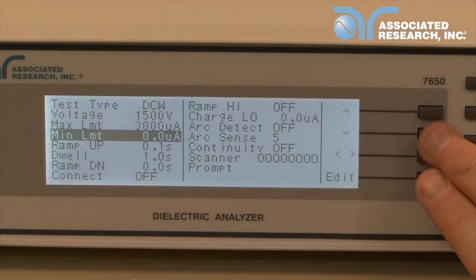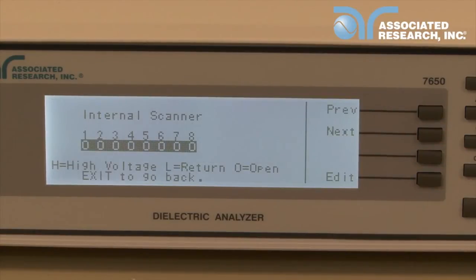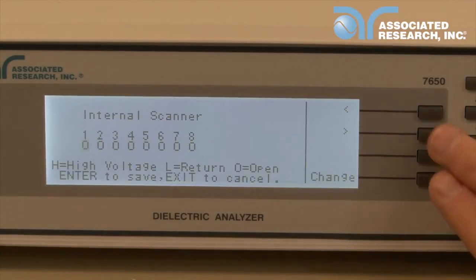We're also going to use the scanner to test two separate points on the DUT. We want to test the insulation between pins 1, 2, and 4, so we're going to set pins 1 and 2 both high and pin 4 low.